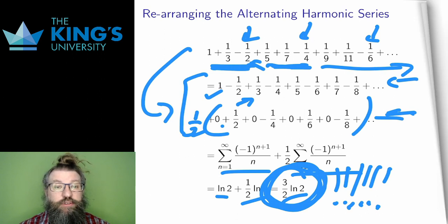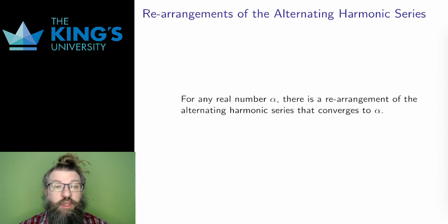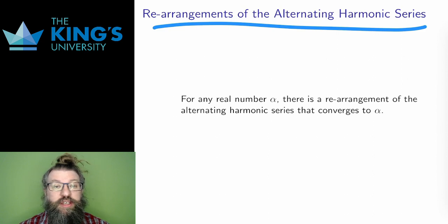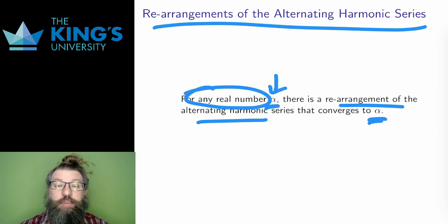And it actually gets even stranger. Here's a theorem for you, which I won't prove in the video, but ask me about it in class if you want the explanation. It turns out that I can rearrange the terms of the alternating harmonic series to add up to anything I want. Any number at all. For every real number, there is a particular rearrangement of the alternating harmonic series that adds up to that real number.